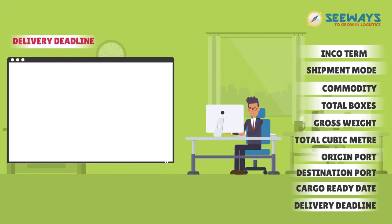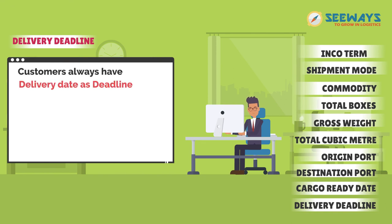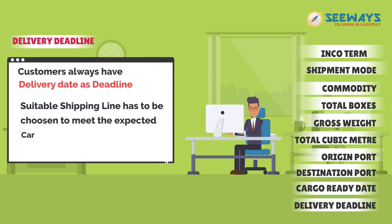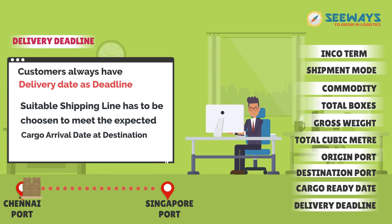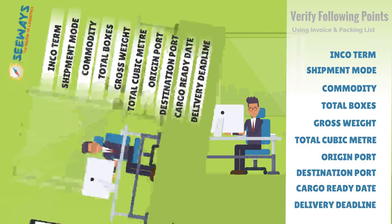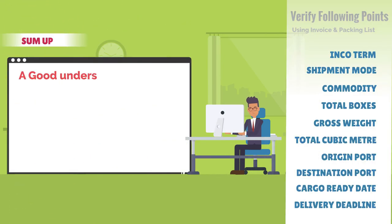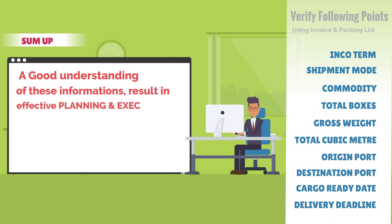Delivery deadline: customers always have delivery dates as deadlines. The suitable shipping line has to be chosen to meet the expected arrival date. To sum up, a good understanding of this information results in effective planning and execution of shipments.